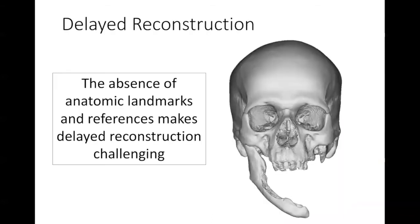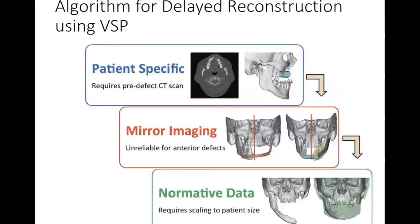Let's talk about delayed reconstruction. The problem with delayed reconstruction is that there are no anatomical landmarks to reference. When you do delayed reconstruction, you're guessing as to where existing structures go, where they need to be manipulated to, and how large the removed segment was. We've written a paper describing an algorithm for delayed reconstruction using virtual surgical planning.